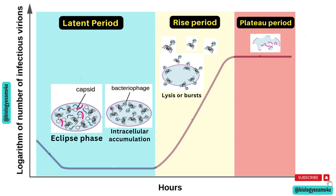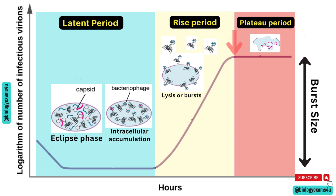One more point: what is burst size? Burst size refers to the average number of phage particles released from a single infected host cell upon lysis. It is calculated by dividing the number of phages at the plateau by the number of phages at the end of the latent period.